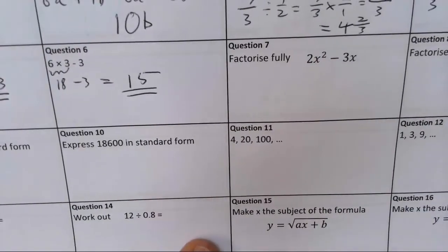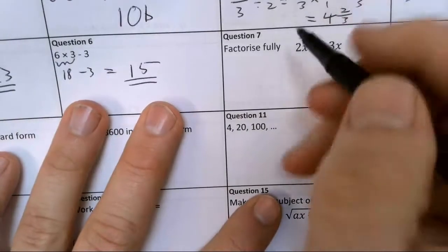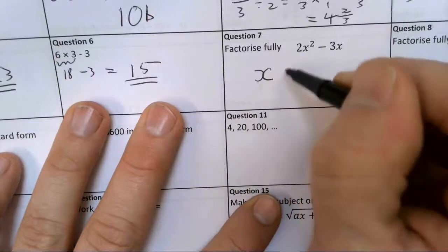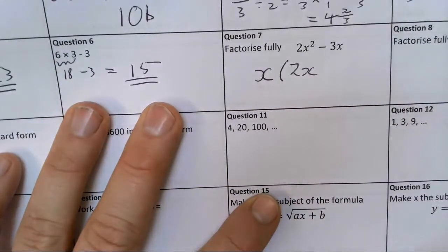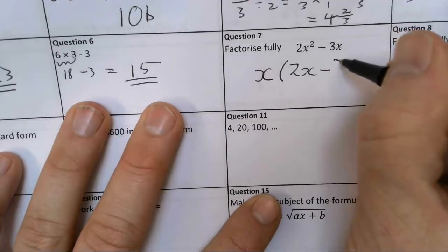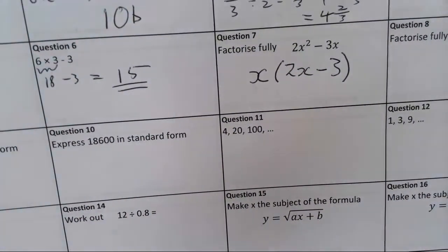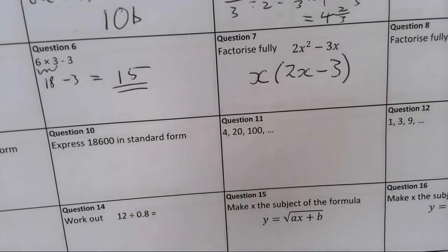Factorize fully. x is the common factor which I can take out, nothing else to take out here. So it's going to be x times by 2x to give me 2x squared, and then I'm going to take away 3, because x times by minus 3 would give me minus 3x.